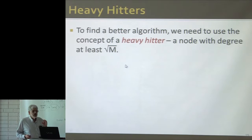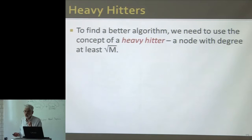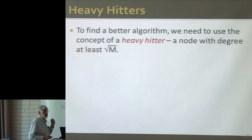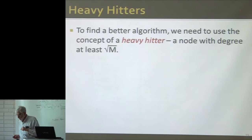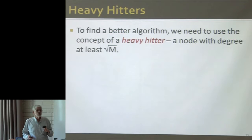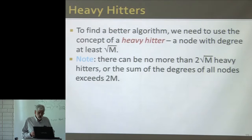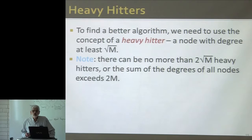The key to all of these optimal join algorithms is making a distinction between heavy hitter values and those that are not. In this situation, a heavy hitter is a node whose degree — that is, the number of edges coming in — is at least the square root of the number of edges.